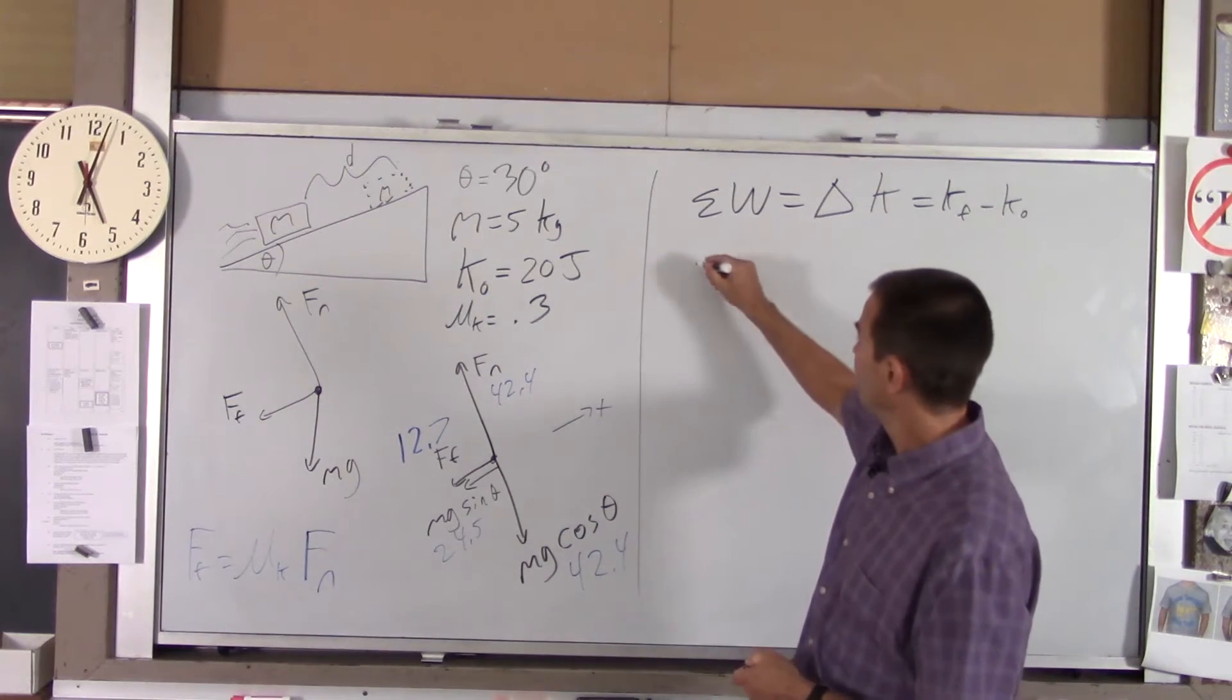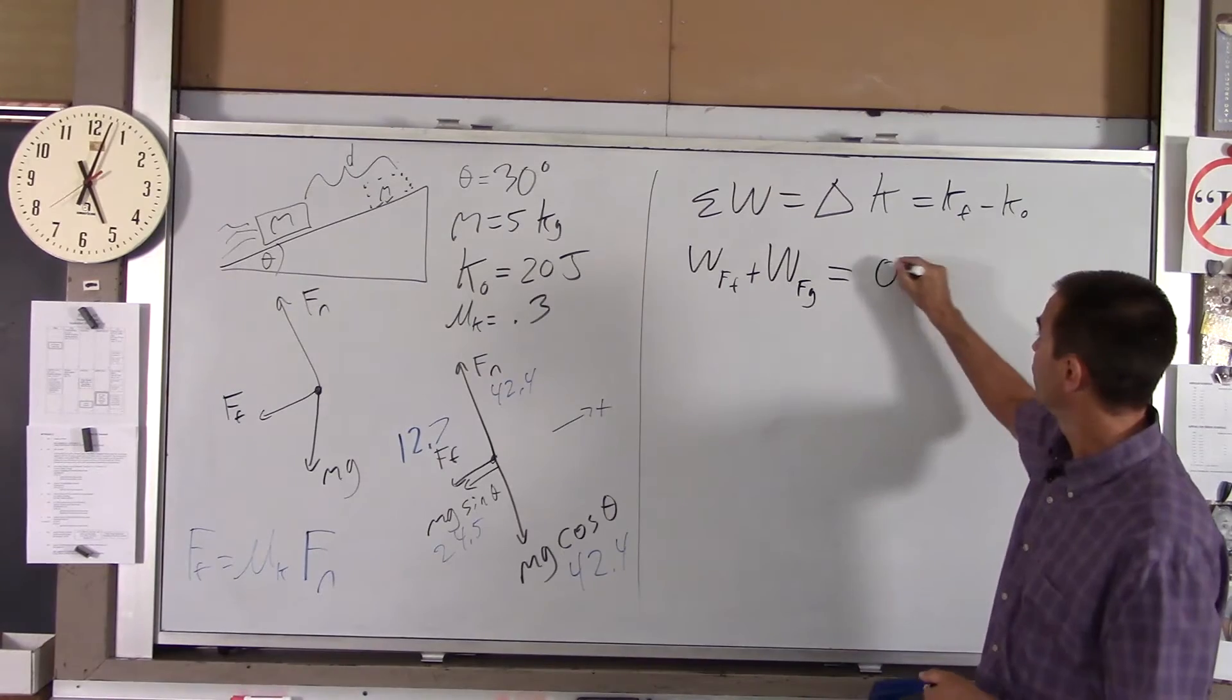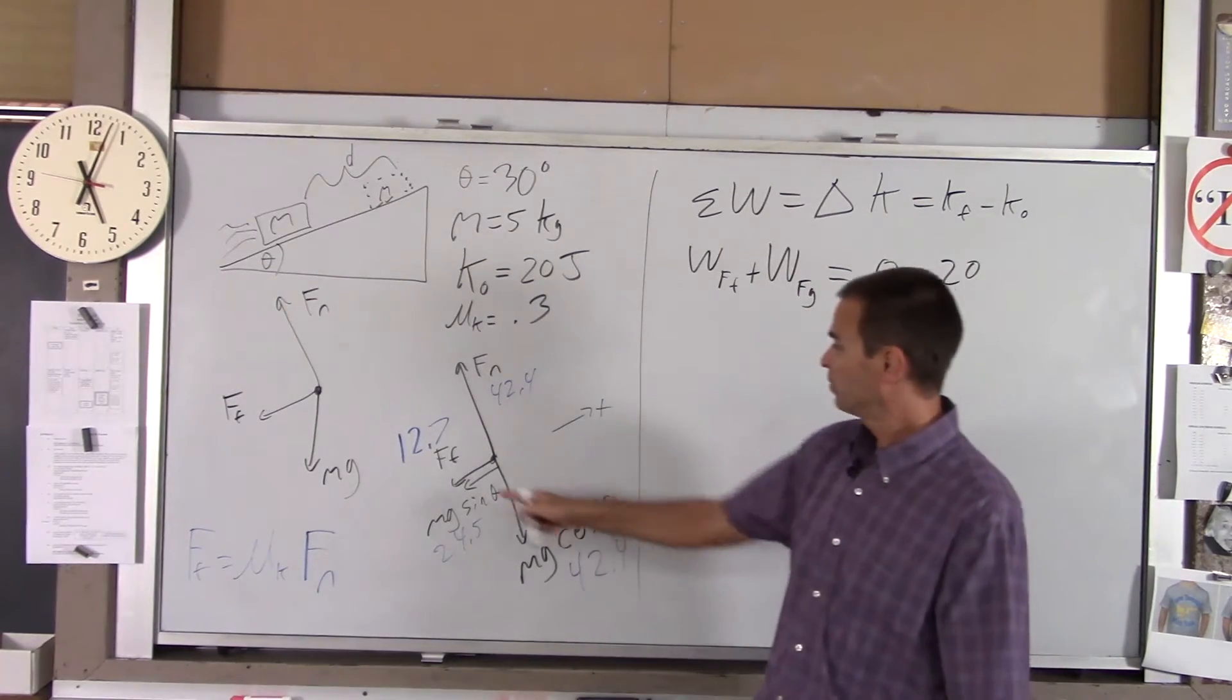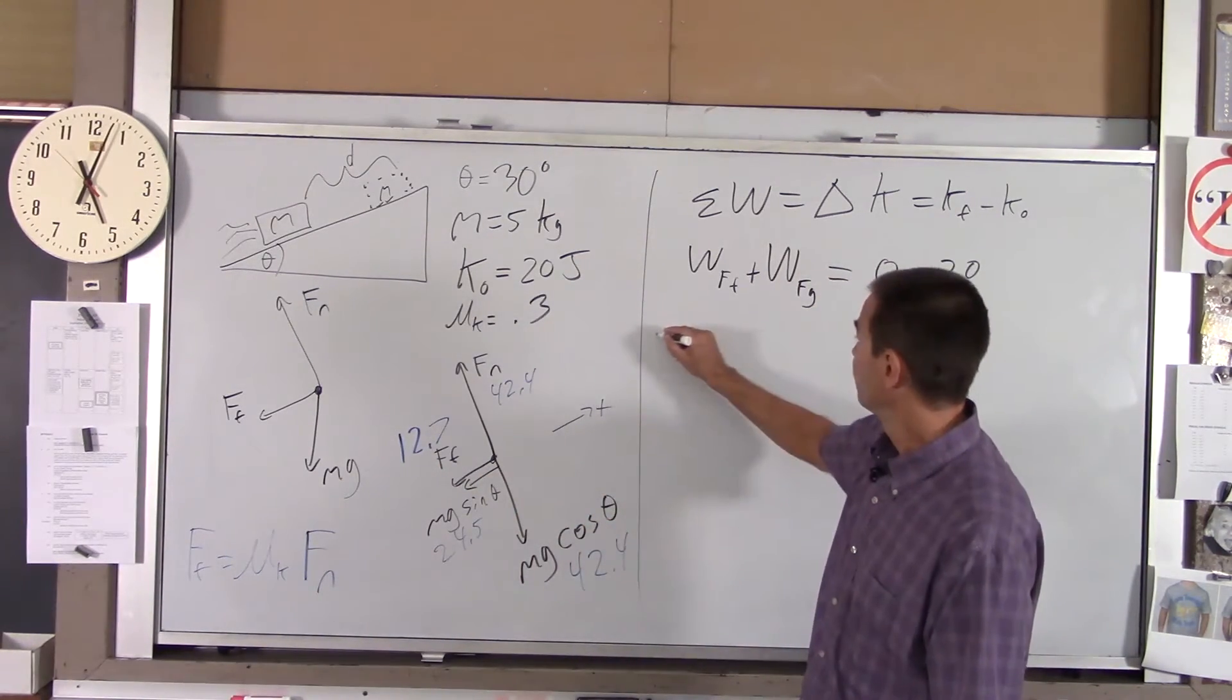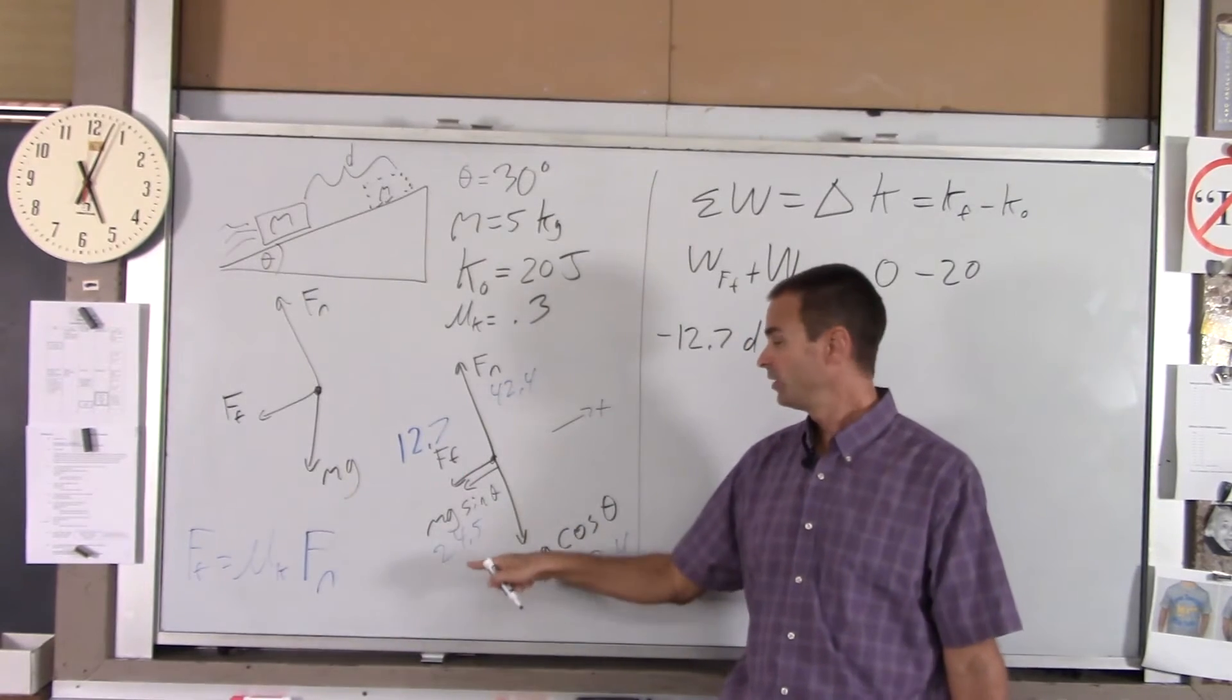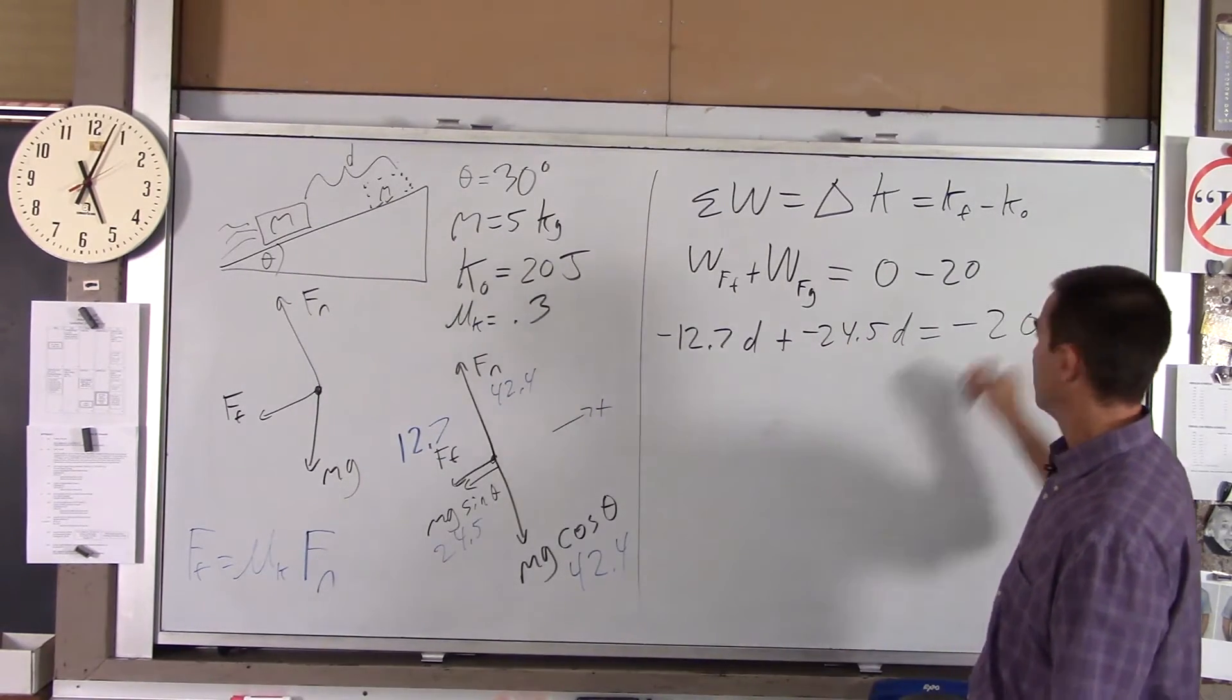They're both pointing in the opposite direction of that motion. So they're both doing negative work. So, the network is going to be the work done by the force of friction plus the work done by the force of gravity, and that's going to equal 0 minus 20. Both these terms are going to be negative because they're both forces doing negative work, and it's very simple. The work done by the force of friction will be negative 12.7 times d, which I don't know. So, negative 12.7 d plus work done by this component of gravity, that's the one that's parallel to the motion, is negative 24.5 times our unknown d.